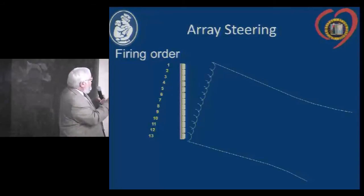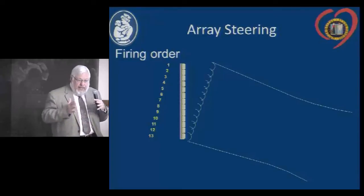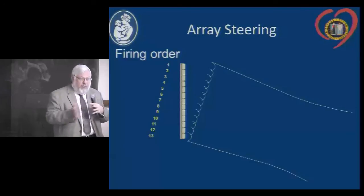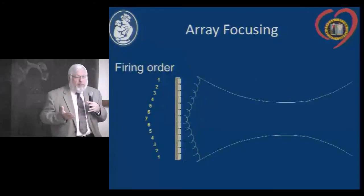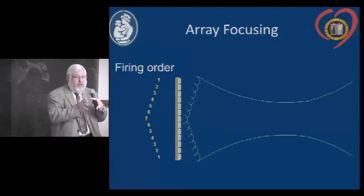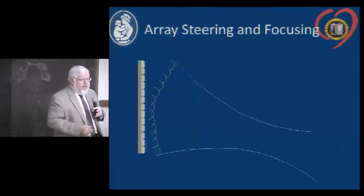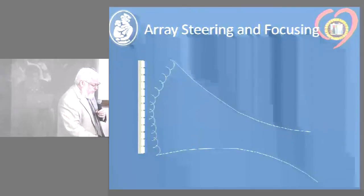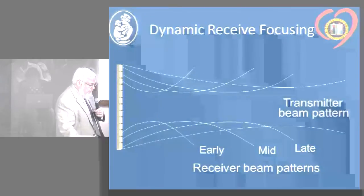Each element creates its own wavelet. The wavelets coalesce through constructive and destructive interference to create the beam emanating from the array transducer. By changing or phasing the excitation of each crystal — so-called phased array transducers — you steer the beam. By changing the timing of firing each transducer element, based on wave interaction physics, the beam is steered back and forth. In an even more complex fashion, you can also accomplish focusing the beam as well as steering it.